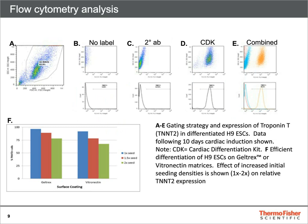Here we show flow cytometry analysis used to measure efficiency of differentiation. Cells were tagged with fluorescent dye for TNNT2 and measured by flow cytometry in graphs A, B, and C. Graph D is a graphical representation of flow cytometry data, also showing effective seeding density of PSCs and that Geltrex and Vitronectin are compatible substrates. The importance of seeding density between lines will be illustrated on the next slide.